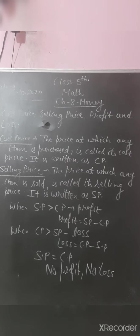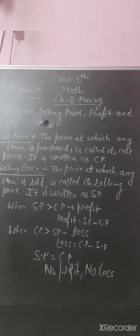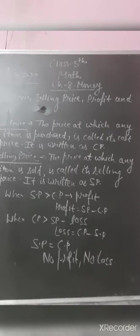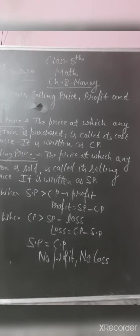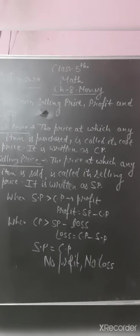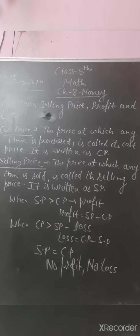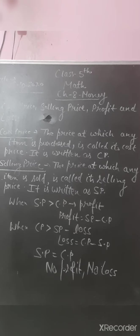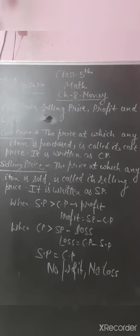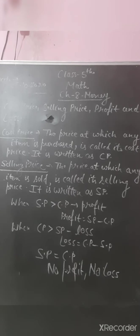As per schedule, your maths class is there. Chapter 8, Money, we will be continuing with that chapter. In the last class we did some questions related to addition, subtraction, multiplication, and division related to money. Today we will discuss a few terms associated with money: cost price, selling price, profit, and loss.